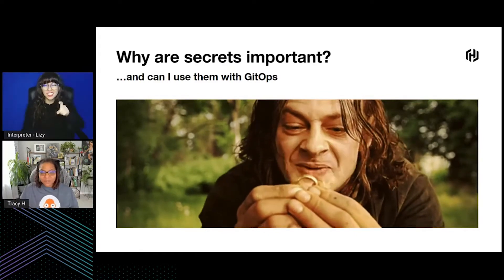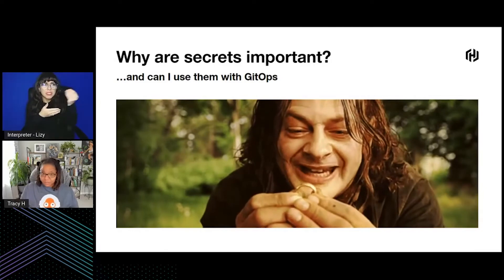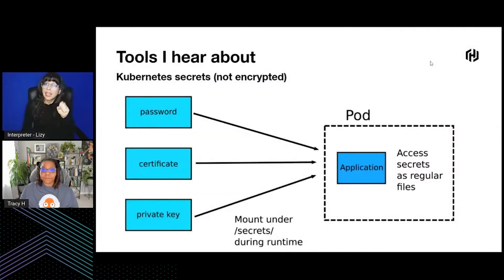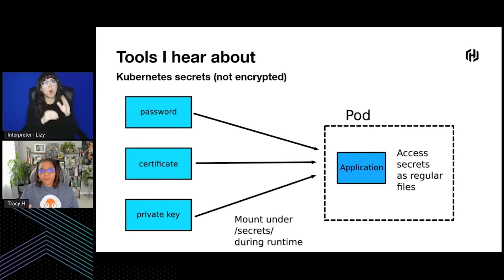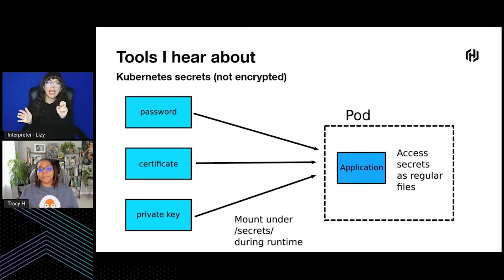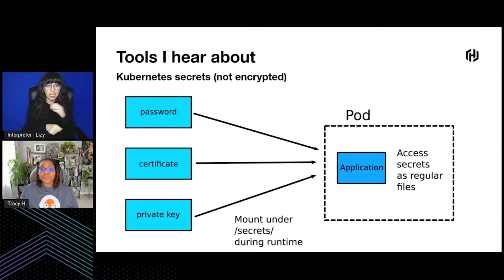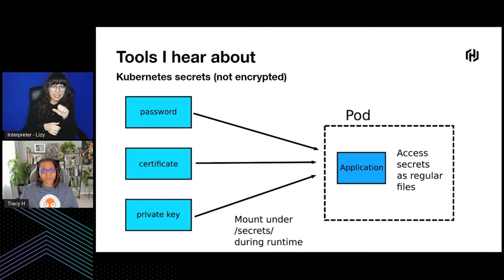Wouldn't you want your secrets outside of your orchestrator — in this instance, Kubernetes? Kubernetes actually includes a native secret resource that you can use in your applications. By default, these secrets are not encrypted in any way, and the base64 encoding used should never be seen as a security feature. While there are ways to encrypt Kubernetes secrets within the cluster itself, we're more interested in encrypting them outside the cluster so we can store them externally in Git, making it fall under GitOps.